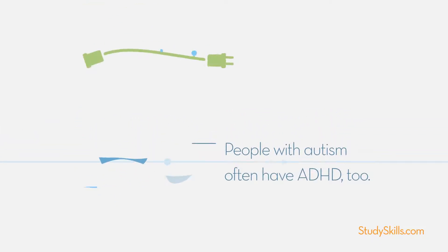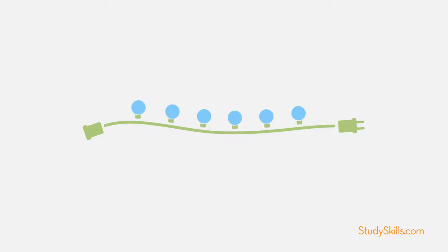For example, imagine this string of lights represents the neuron wires connecting all sections of your brain. What happens if this circuit is cut? The power goes out.